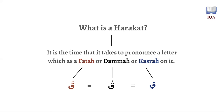In the context of mudood, when they say two harakah, four harakah, and so on, what it means is the time that it takes to pronounce a letter which has a fatha, a dhamma, or a kasara on it. A harakah in this context is the time it takes you to pronounce a letter with a fatha, dhamma, or kasara on it. So qaa, qoo, qi — all of these have the same harakah; you need the same time length to pronounce each one. All of them have the length of one harakah.